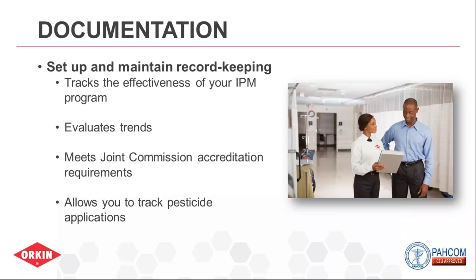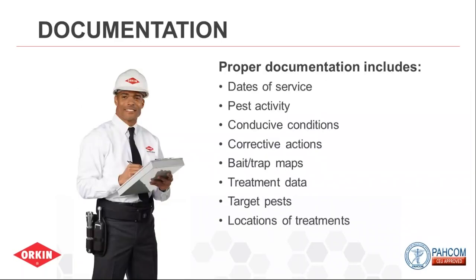Your documentation should meet Joint Commission accreditation requirements — if you have Orkin, it currently does. Review those requirements with your provider to make sure you're getting everything you need. Importantly, documentation allows you to track and look at the history of any pesticide applications, including locations. If you are audited with reference to pest management, they'll be looking for days of service, target pest, conducive conditions, and what other corrective actions and non-chemical control measures were taken.